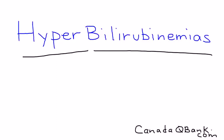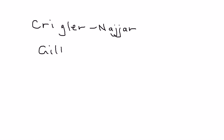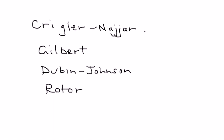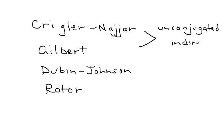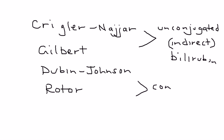Hyperbilirubinemias is what we will talk about in this video. These are a group of inherited disorders, and there are four of them: Krigler-Najjar, Gilbert, Dubin-Johnson, and Rotor. Krigler-Najjar and Gilbert are unconjugated bilirubin disorders — unconjugated is also referred to as indirect — and Dubin-Johnson and Rotor are conjugated, or direct, bilirubin disorders.